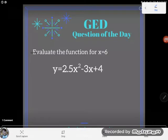So this problem says evaluate the function for x equals 6, and then they give us this equation underneath: y equals 2.5x squared minus 3x plus 4.